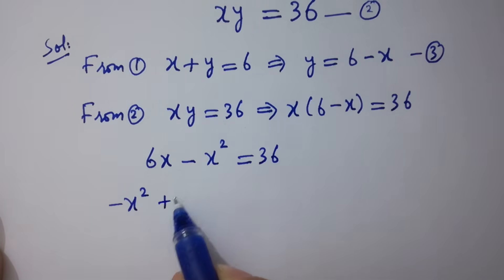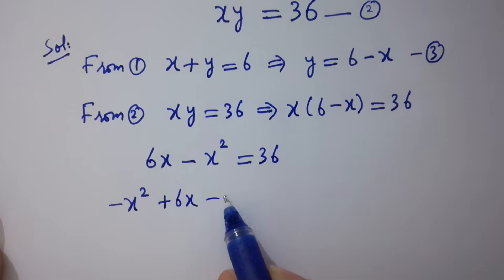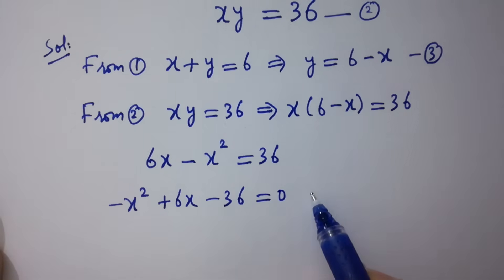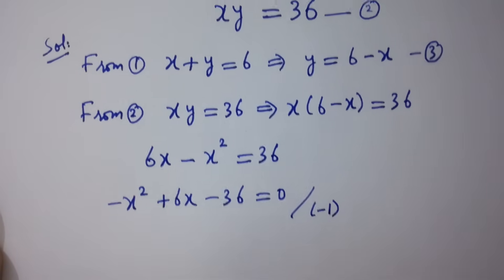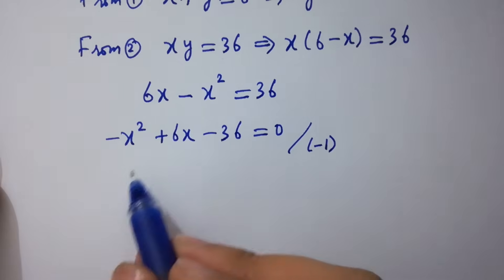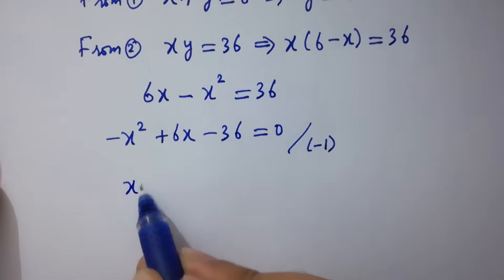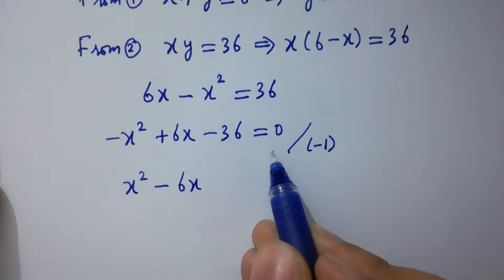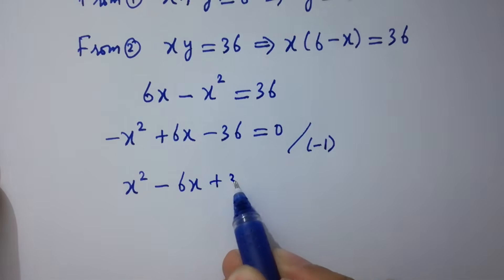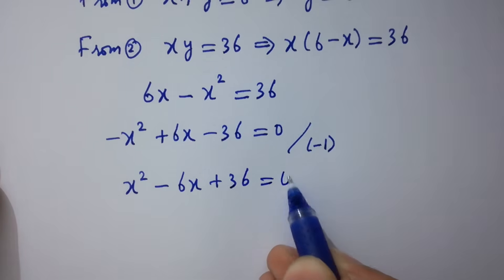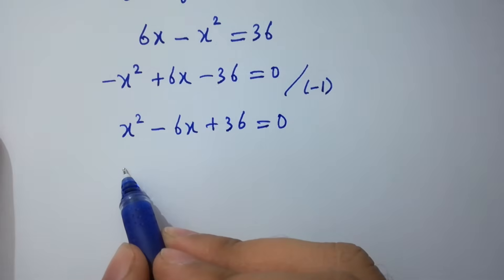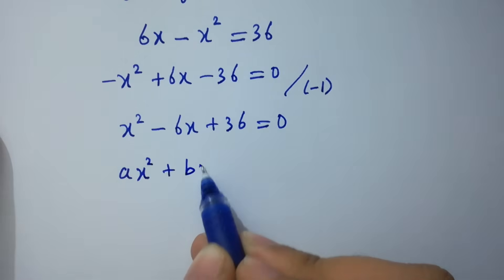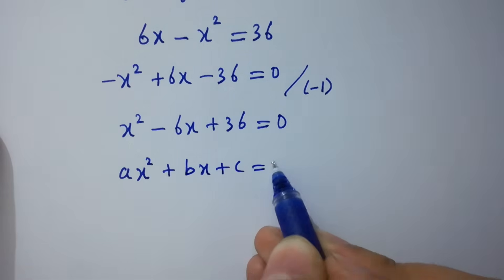Rearranging: negative x squared plus 6x minus 36 equals 0. Dividing both sides by negative 1, we get x squared minus 6x plus 36 equals 0, which is a quadratic equation of the form x squared plus bx plus c equals 0.